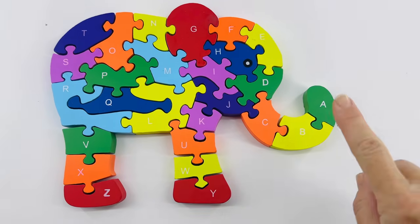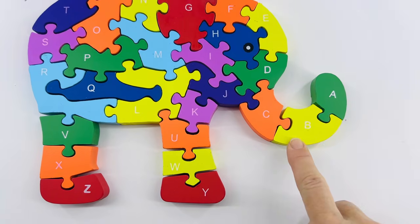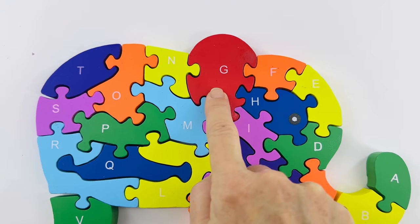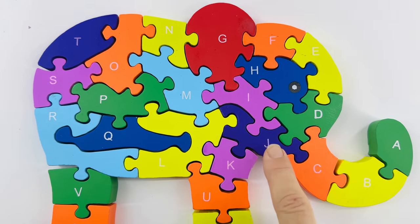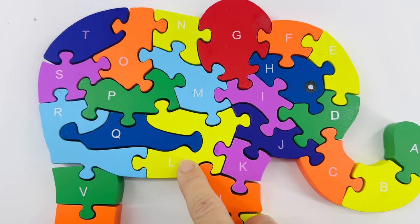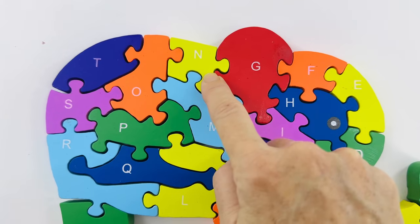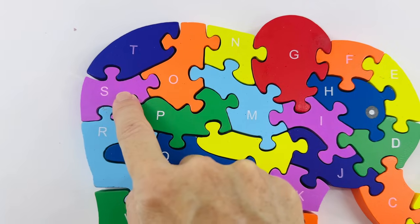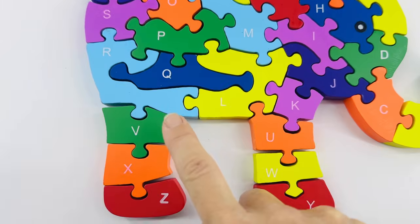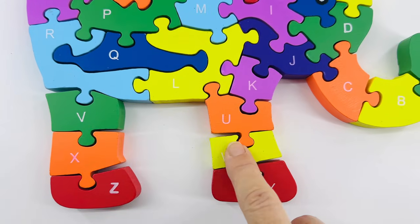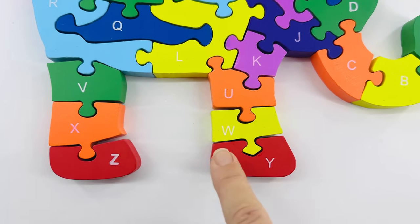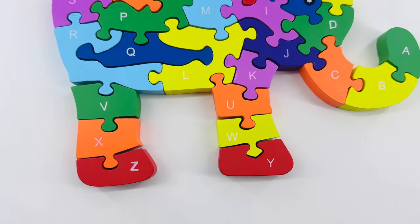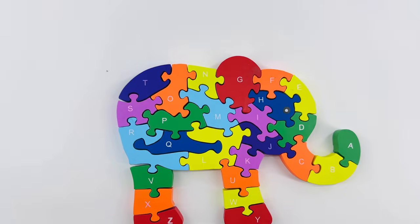Let's say it all together one more time. Make sure you say it with me. A, B, C, D, E, F, G, H, I, J, K, L, M, N, O, P, Q, R, S, T, U, V, W, X, Y, Z. That's the alphabet. And this is our alphabet elephant. Great job. Good job!